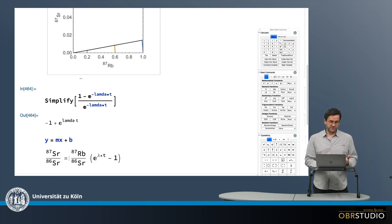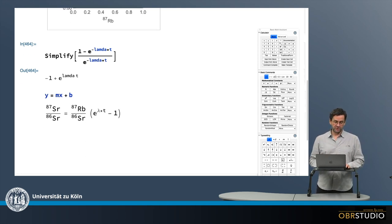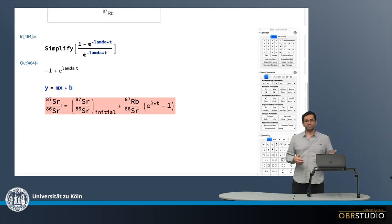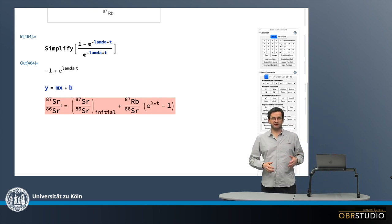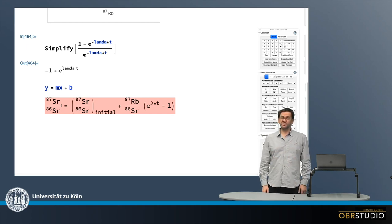And then the final bit that is missing is that there of course is some initial strontium 87. So this is the 87 produced by rubidium 87. It's not a first. There's already some there. So we need to add this as some initial value, which would be the initial here on the y-axis. So we have some initial strontium, which will be added to the radiogenic part here. And then this is the final isochron equation, which as you can see can be rather straightforward derived from the decay equations.